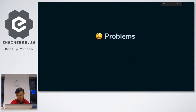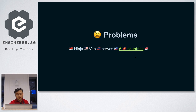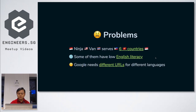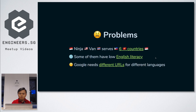We at NinjaVan serve six countries: Indonesia, Malaysia, Thailand, Philippines, Vietnam, and Singapore. Some of them have low English literacy, so we have to provide the website in local languages. But Google needs different URLs for different languages for the sake of search engine optimization. If you serve a single page with one URL but with content in two different languages, Google will be confused when crawling our website, so we won't get our website optimized for search engines.